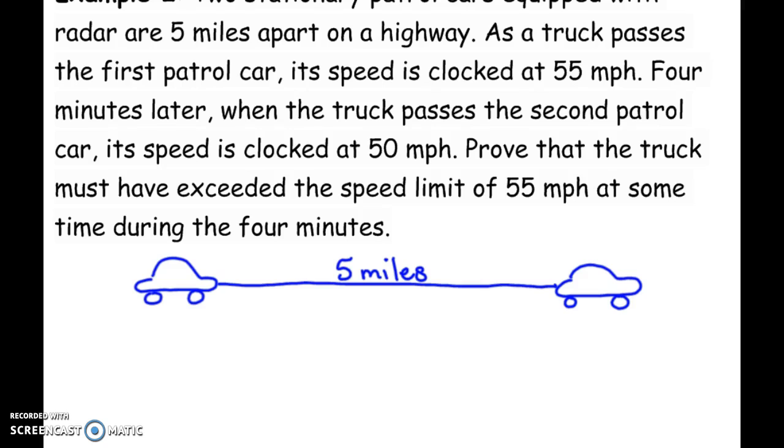As a truck passes the first patrol car, his speed is clocked at 55 miles per hour. So he's going 55 right here. Four minutes later, when the truck passes the second patrol car, its speed is clocked at 50 miles per hour. Prove that the truck must have exceeded the speed limit of 55 miles per hour at some time during the four minutes. We're going to use the mean value theorem to prove this.